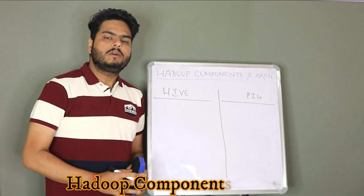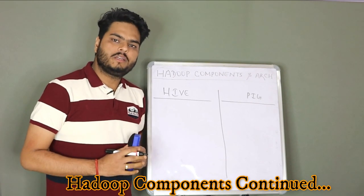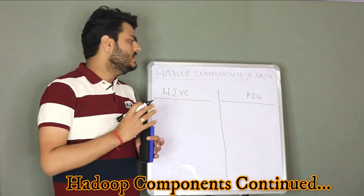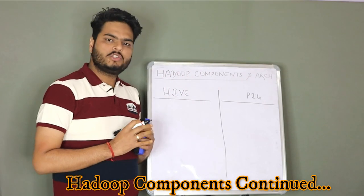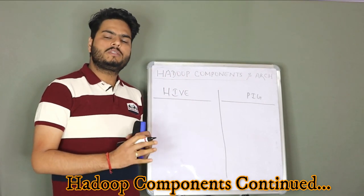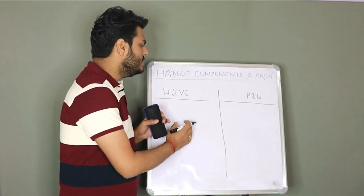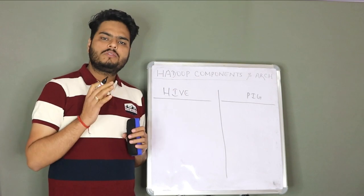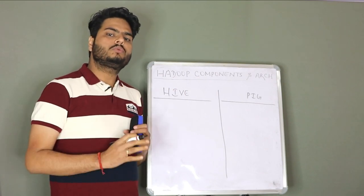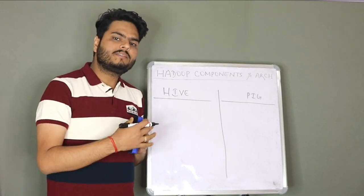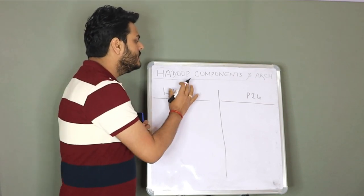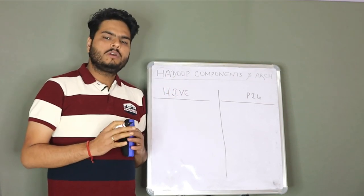Welcome back to Unfold Data Science friends. My name is Aman and I am a data scientist. Continuing on the Hadoop components and architecture, this is part 2 of the same series where I am going to explain what is Hive, what is Pig, what is Zookeeper and what is Uzi from data access and data management point of view in Hadoop components.